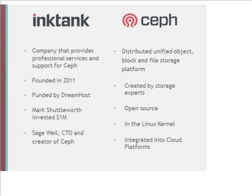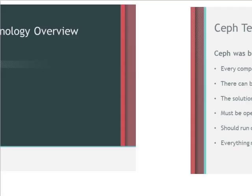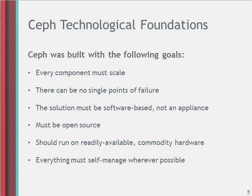Ceph was built on a bunch of key foundation goals. The first pair: every component must scale, and there can be no single points of failure. There can be no bandwidth-limiting redirector that constitutes a single point of failure. All clients must be able to communicate directly with all servers — all data transfers do not go through intermediaries. There can be no key components with limited capacity, no metadata server that ultimately runs out of operations per second, no MySQL table that falls over once you've got more than a billion rows in it. Everything must be highly scalable.